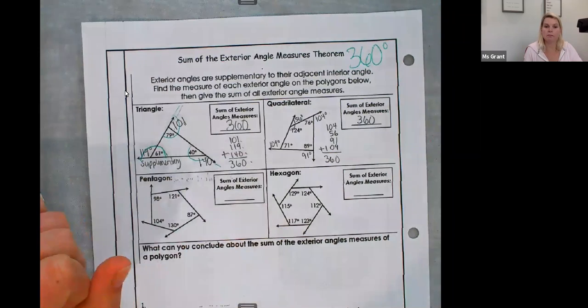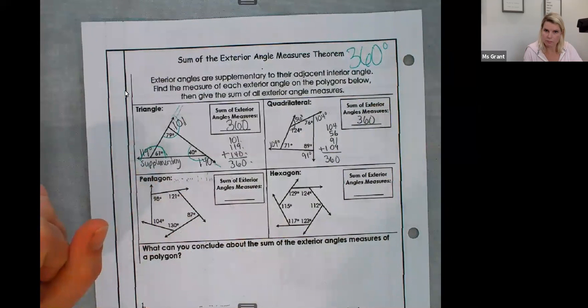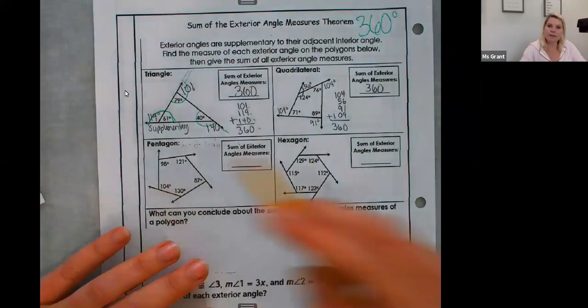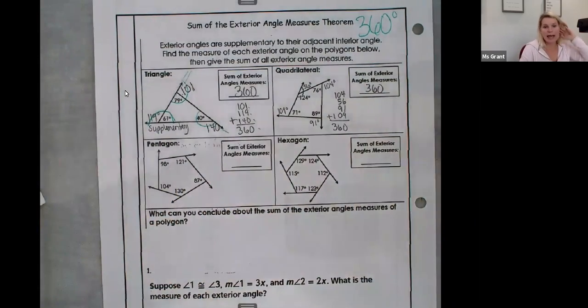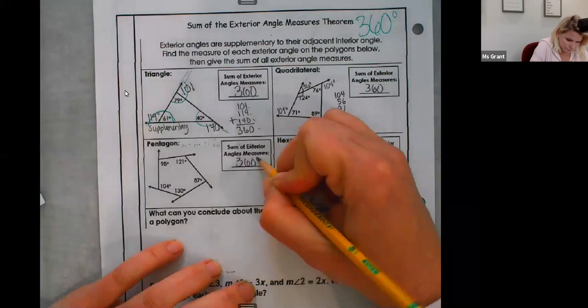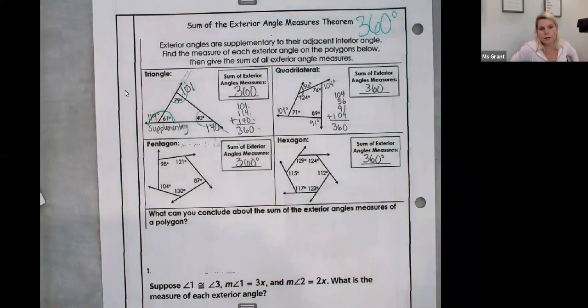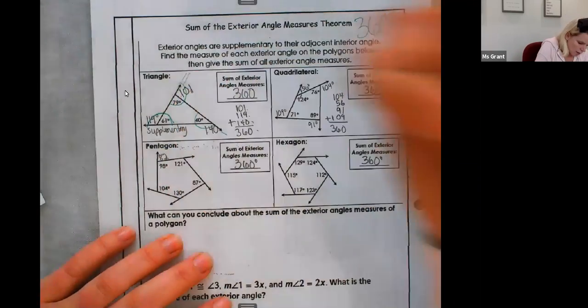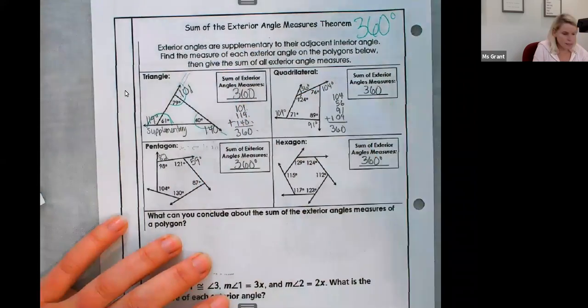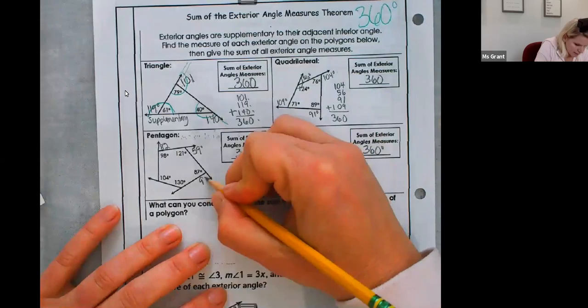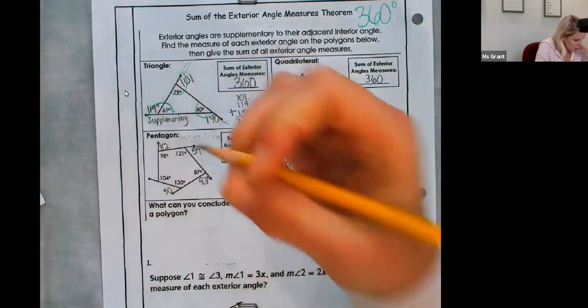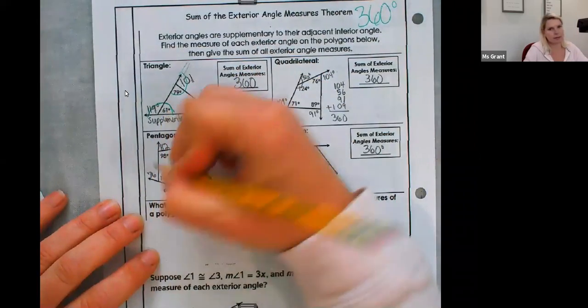So that is the exterior angle measure for all polygons, no matter how many sides it has. I'm going to fill in for the pentagon and the hexagon, but again, it's going to add up to 360. So pentagon 98 plus 82 is supplementary, 121 plus 59 is supplementary, 87 plus 93 is supplementary, 130 plus 50 is supplementary, 104 plus 76 is supplementary.